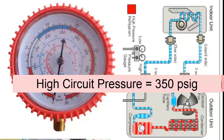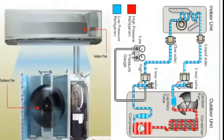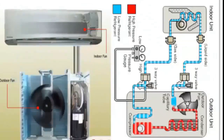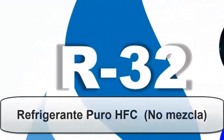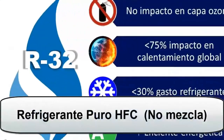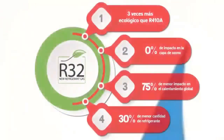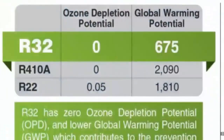Now my colleague Francisco is going to explain some particularities of the R32 refrigerant gas. R32 is a pure HFC-type refrigerant with a low global warming potential index and great efficiency and refrigeration power, which has made it the refrigerant of choice for many manufacturers for their new equipment. Now let us study in detail the characteristics of R32.